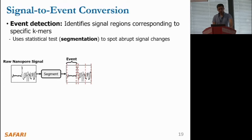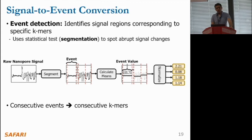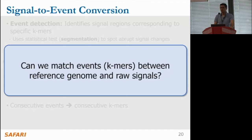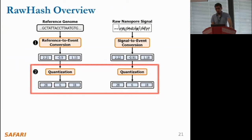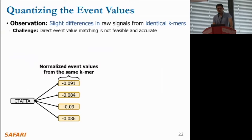To convert signals to events, we use an event detection mechanism. This is done by performing a statistical test or segmentation to identify the abrupt signal changes generated as molecules move through nanopores, followed by mean calculation and normalization. At a high level, we assume that consecutive events represent consecutive k-mers. Now that we have a series of events for both reference genomes and raw signals, let's explore whether we can directly match these event values to identify similarities. This leads to the second step: the quantization step.